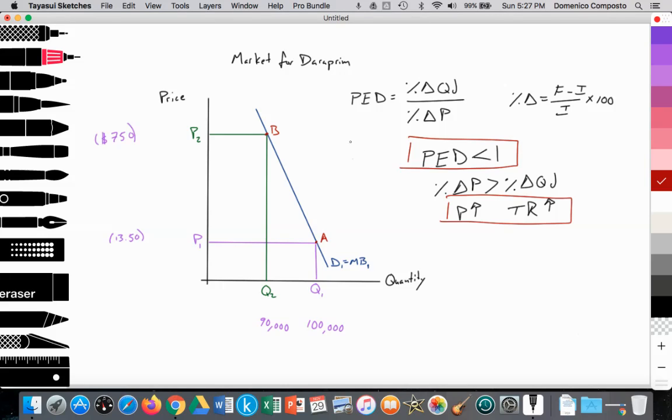So let's go ahead and illustrate this. As can be seen, we have a graph. Let's say we'll call it graph A, illustrating the market for a pharmaceutical drug, Daraprin.